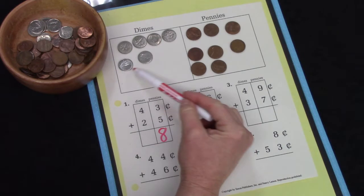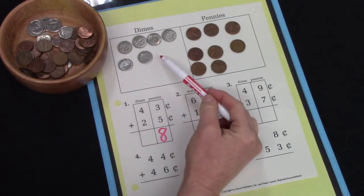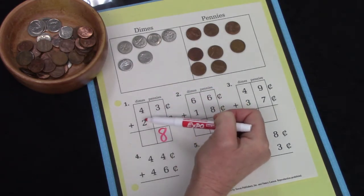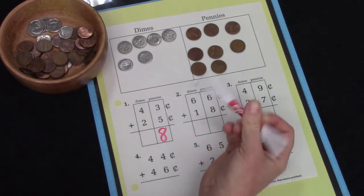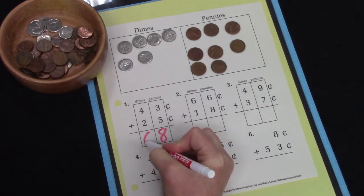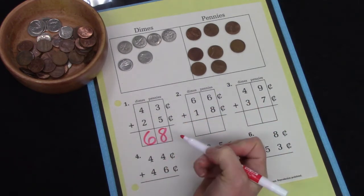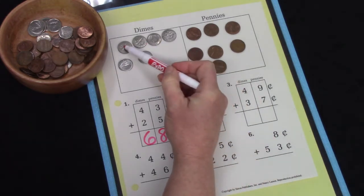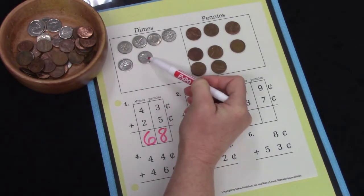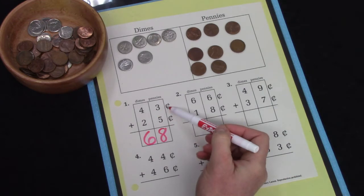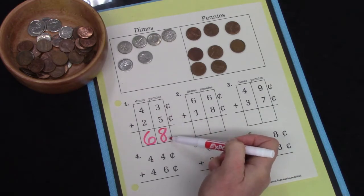And now we are going to add our dimes. We have 4 plus 2. Well some of you already know your math facts and you know that 4 plus 2 is 6. 1, 2, 3, 4, 5, 6. 43 plus 25 is 68.